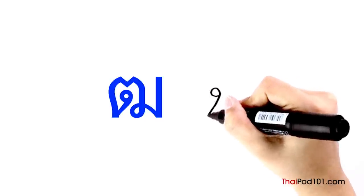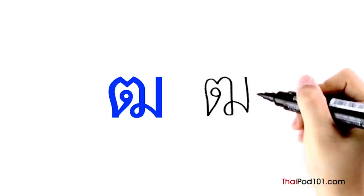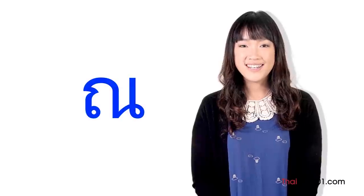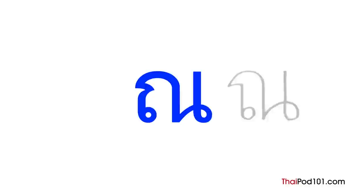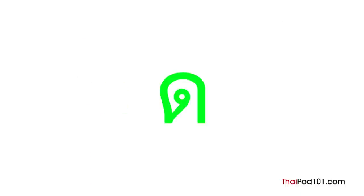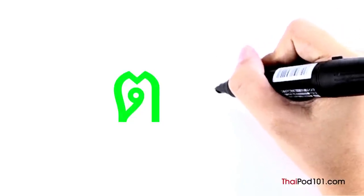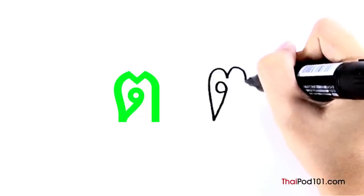The next letter: let's practice writing. Start with a clockwise head and draw the shape of the letter, then blend this into the shape of the next letter. This letter makes a sound when it's an initial or final consonant. Start with the head, make the shape, and finish with the loop on the right side with a vertical line.